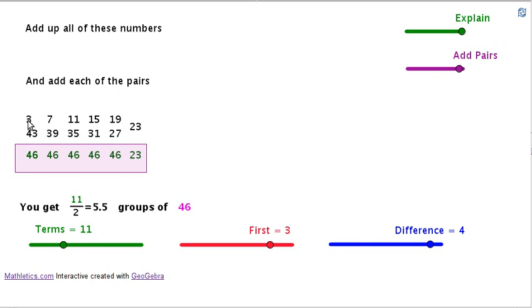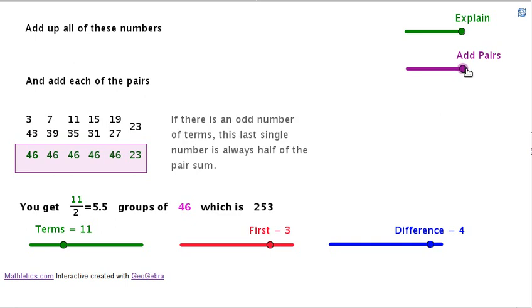When you get to the middle term, the 23 is exactly half of 46. So you've got 11 terms, which gives you 5 and a half groups—half of 11 is 5 and a half. Groups of 46, where the 46 comes from the first term and the last term. That's the working mathematically bit. When you multiply 5 and a half lots of 46, you end up with 253, which is the answer we got before.